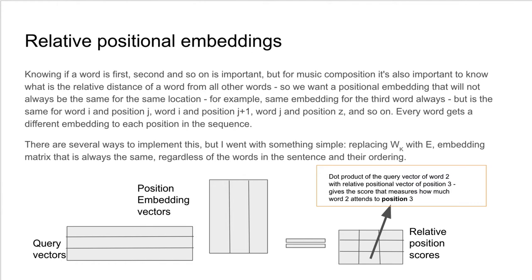Here, in the music generation model, it's also beneficial to add a relative positional embedding. Because knowing if a word is first, second, and so on is important, but for music composition it's also important to know what is the relative distance of a word from all other words. So we want a positional embedding that will not always be the same for the same location. For example, same embedding for the third word always. But it's the same for word I and position J, word I and position J plus one, word J and position Z, and so on. Every word gets a different embedding for each position in the sequence.